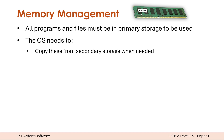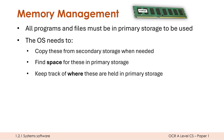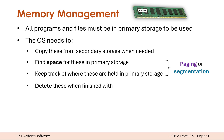So the OS needs to, first of all, copy these programs and files from secondary storage where they're based when they are needed. If I double click a program to start running it, the OS needs to copy it from secondary storage into RAM. It will need to, before it actually adds it into RAM, find some space for these. It will need to, as things progress, keep track of where different things are held in primary storage. You might have a huge number of things open, and it needs to know where they are. Paging and segmentation are two techniques for really addressing these two bullet points.